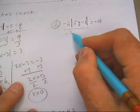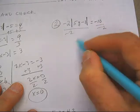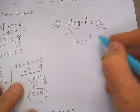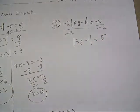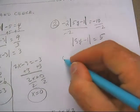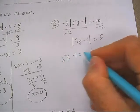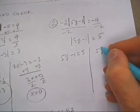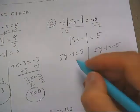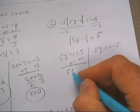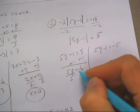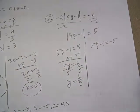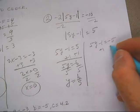Let's divide by negative 2. Then I need to know where 5y minus 1 is equal to 5 and where 5y minus 1 is equal to negative 5. Let's add 1 — y is 6 fifths.